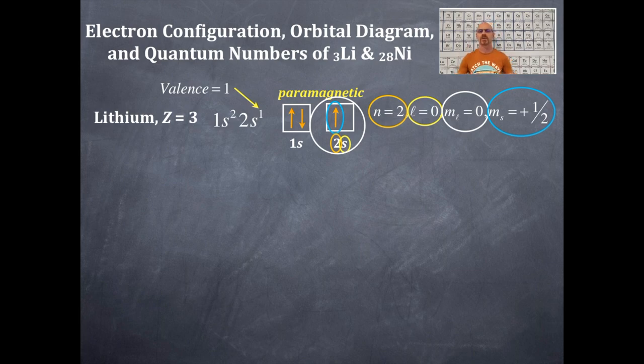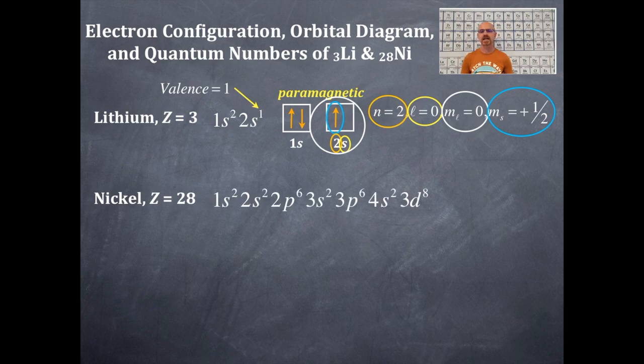Find nickel on the periodic table. That's atomic number 28, Z of 28. You're going to write out the electron configuration for nickel. So use your periodic table. Start with 1s1, 1s2, 2s1, 2s2, 2p1, 2p3, 4, 5, 6, etc.